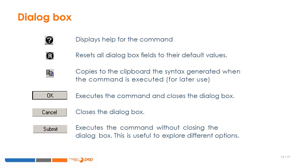There are six buttons at the bottom of the dialog box. The question mark button accesses help for the command. The R button resets all dialog box options to their default values. The COPY button copies to a clipboard the syntax generated when the command is executed for later use. The OK button executes the command and closes the dialog box. The CANCEL button closes the dialog box. The SUBMIT button executes the command without closing the dialog box, which is useful to explore different options.